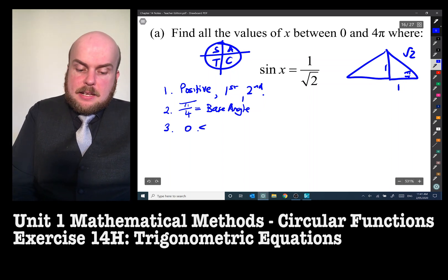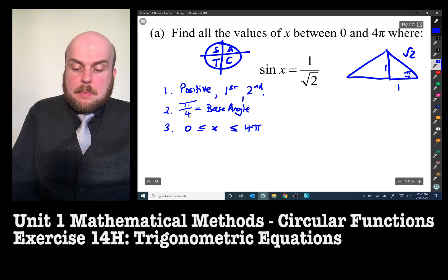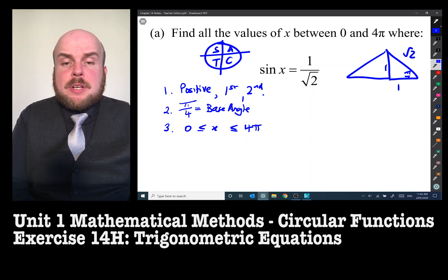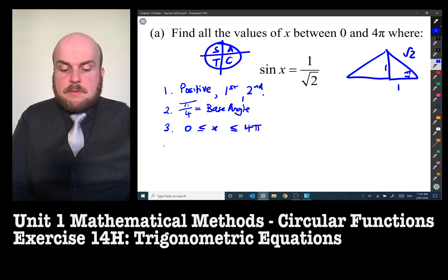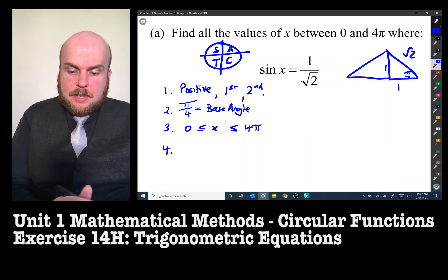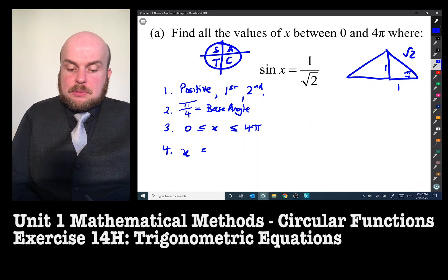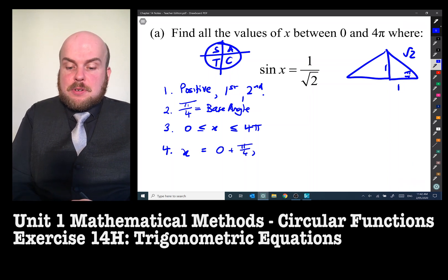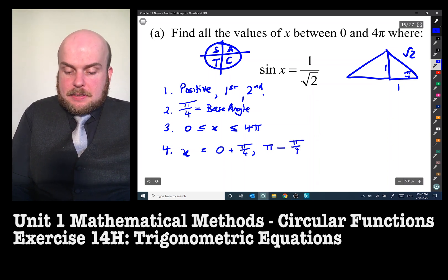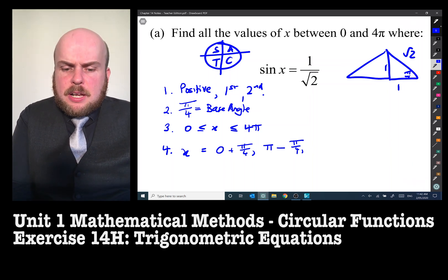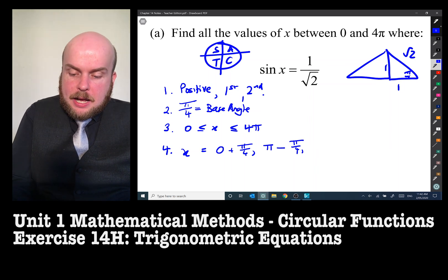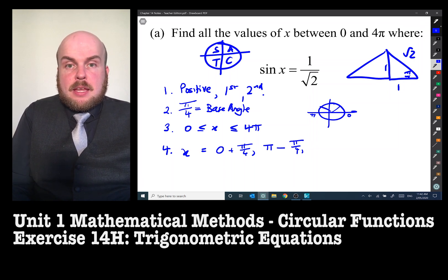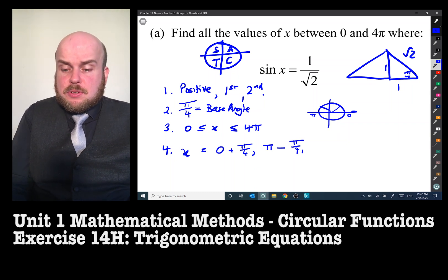The domain. The domain here is we want all the values of x between zero and four pi. Since there's no n value, there's no n next to the x, we don't need to multiply the domain at all. We just need to make sure we have every possible answer to this question between zero and four pi. So now we begin the solving. So x here is equal to, so in the first quadrant, it's going to be zero plus pi on four because that gets me into the first quadrant. In the second quadrant, it gets me pi minus pi on four. But that's only going around the circle once. This is between zero and four pi.